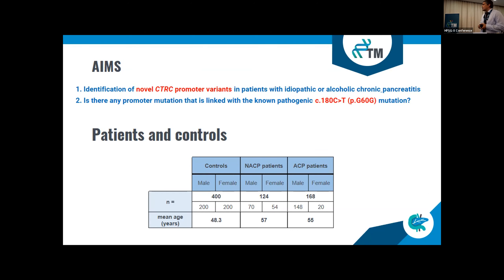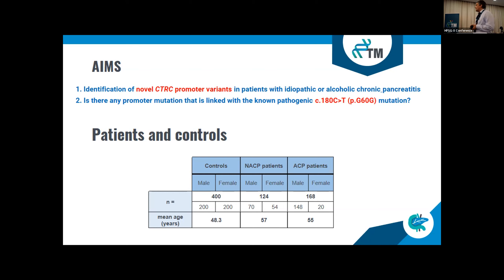The Hungarian Pancreatitis Study Group has a large cohort of controls and patients. We used 400 controls for this study. For the non-alcoholic chronic pancreatitis patients, we had 124 patients, and for the alcoholic chronic pancreatitis group, we had 168 patients. None of the individuals were children — all were adult patients and controls.